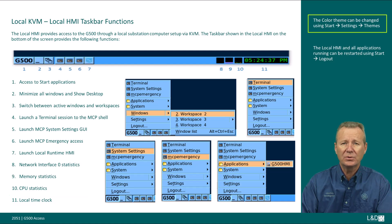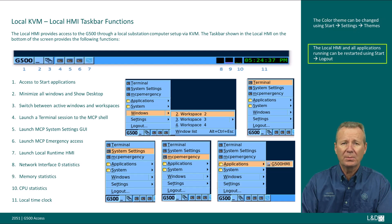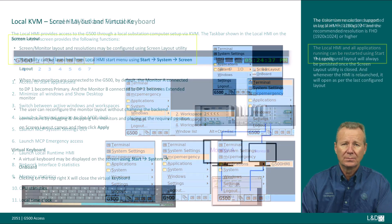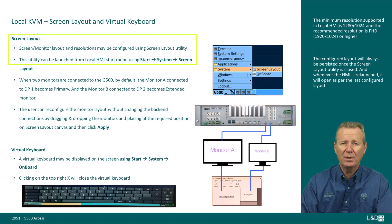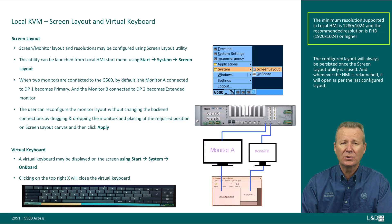The color scheme can be changed using Start, Settings, Themes. The local HMI and all applications running can be restarted using Start, Logout. Screen layout and resolutions may be configured using the screen layout utility. This utility can be launched from the local HMI start menu using the selection Start, System, Screen Layout. The minimum resolution supported is 1280 by 1024 and the recommended resolution is FHD 1920 by 1024 or higher.